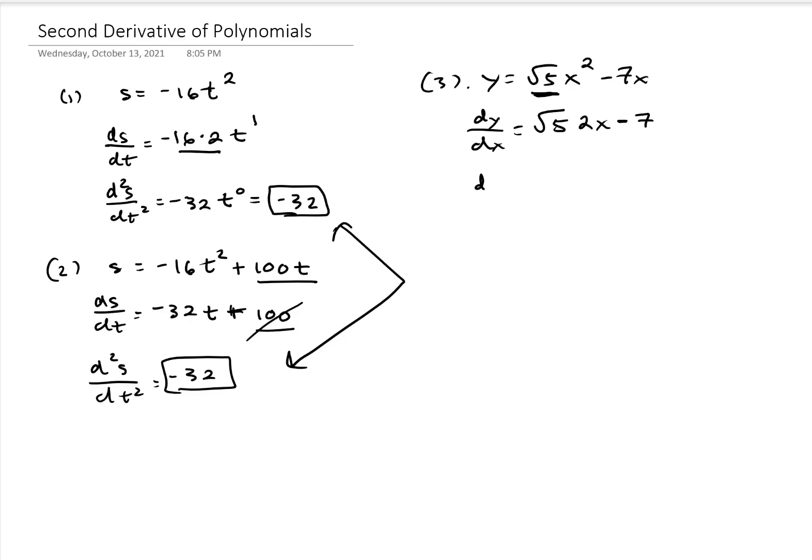Now applying the second derivative, we have d²y/dx² is again, now we have square root of 5 multiplied by 2, we can rewrite this as 2√5. And then we take the derivative of x, that's just 1, and then derivative of a constant, that's 0. So we're left with 2√5.